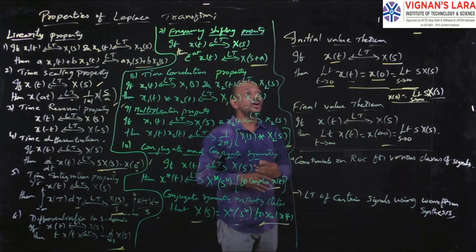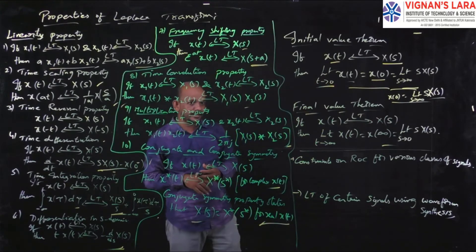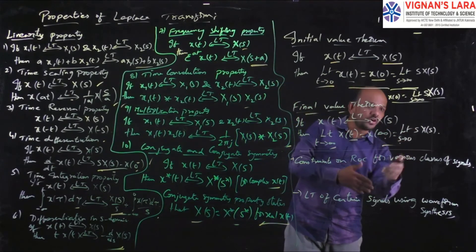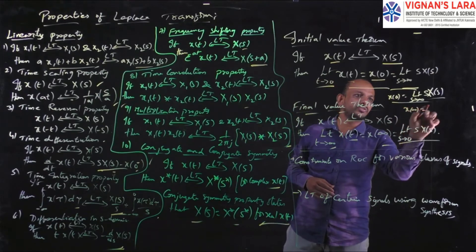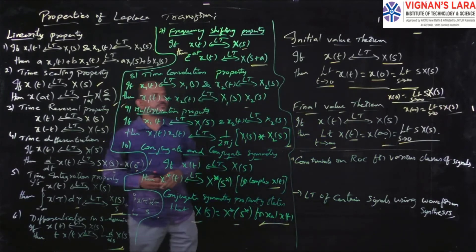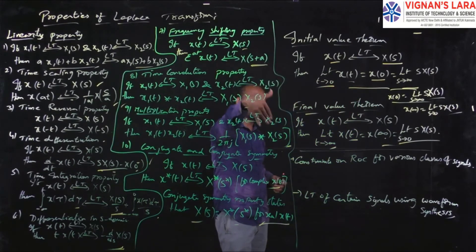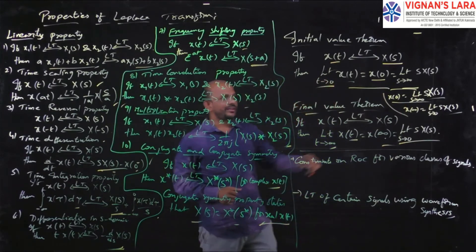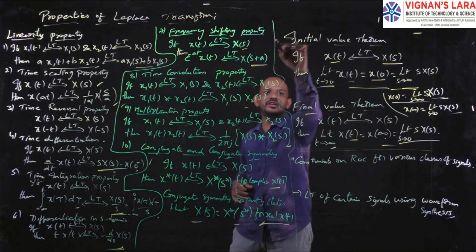For the final value theorem: if x(t) has Laplace transform X(s), then the final value — limit as t → ∞ of x(t), which is x(∞) — is equal to the limit as s → 0 of s·X(s). So, if you know X(s), you can get the initial and final values using these two theorems. These are very important theorems specific to Laplace transform, so you must remember them.